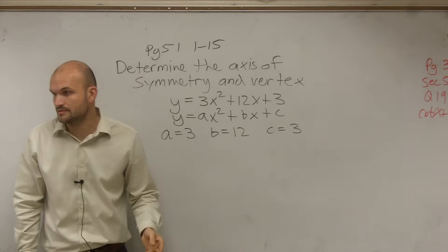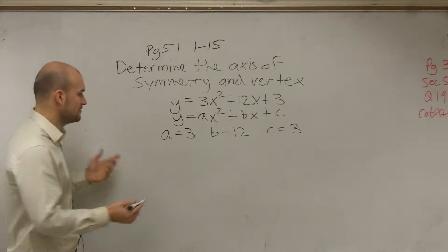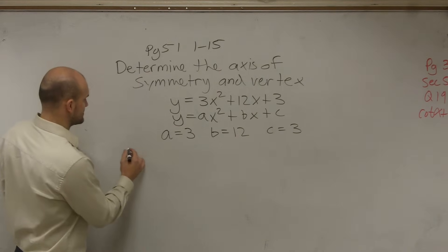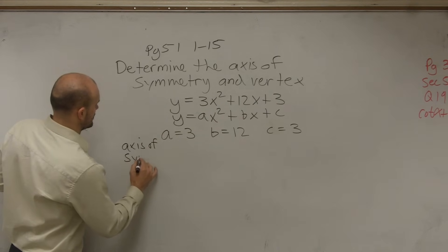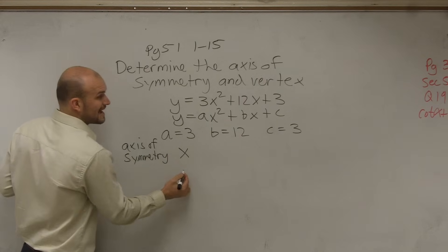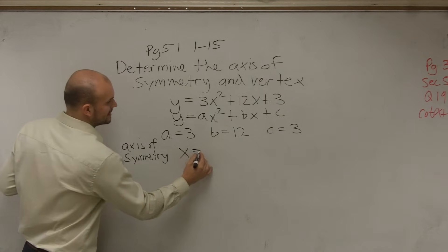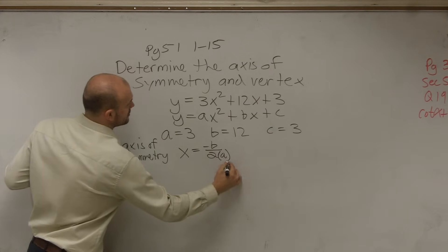Does everybody see how I got those values? OK. So now there's two formulas that we first need to work with. The first formula is what we call the axis of symmetry. So the axis of symmetry is simply just x equals, because it's a vertical line, equals opposite of b divided by 2 times a.